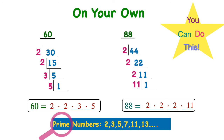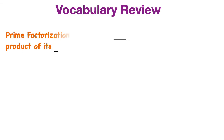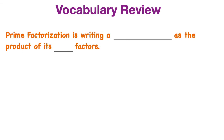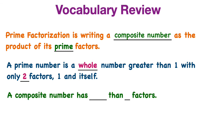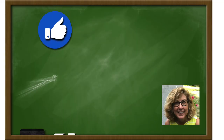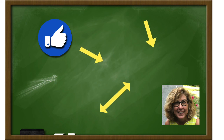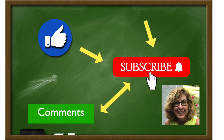Let's wrap up with a vocabulary review. Prime factorization is writing a composite number as the product of its prime factors. A prime number is a whole number greater than 1 with only two factors: 1 and itself. A composite number has more than two factors. If you found this video helpful, please click the like button, subscribe to my videos, and click the notification bell so you'll know when the next videos come out. Thank you for watching and I'll see you next time.